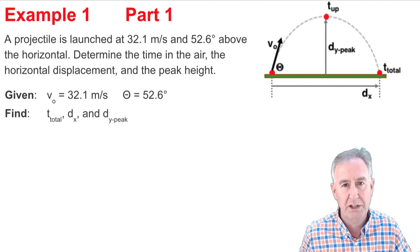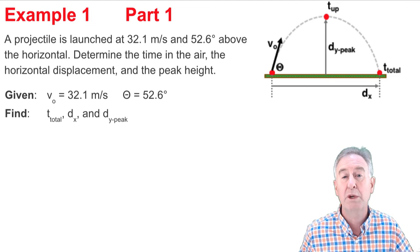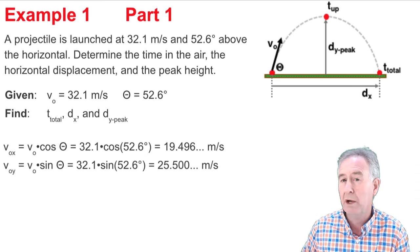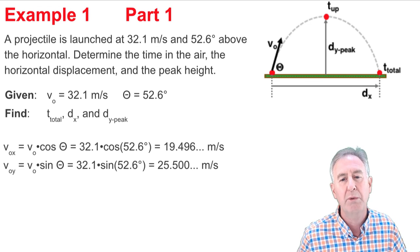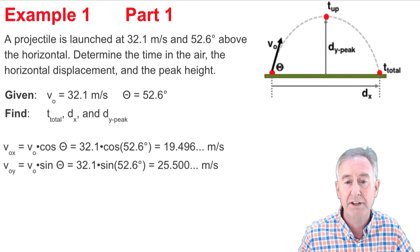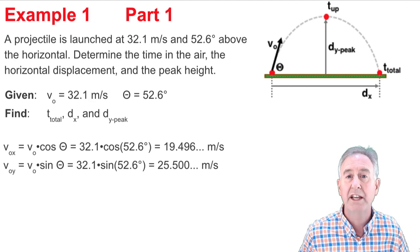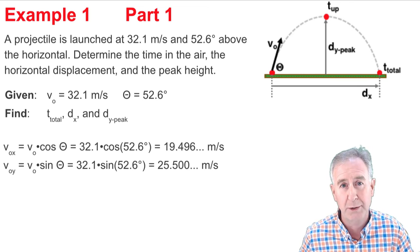My first approach to this is I'm going to take the VO and theta and I'm going to resolve it into its VOX and VOY components. So here's the equation for doing that. When I go 32.1 times the cosine of 52.6, I get the VOX. It's written there and I do the same thing with the sine function to get the VOY. You see my work is shown.